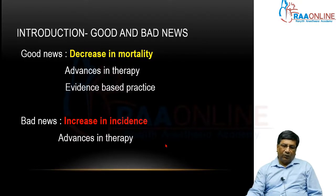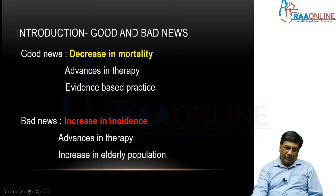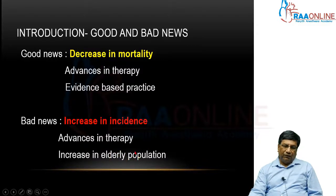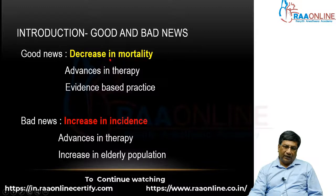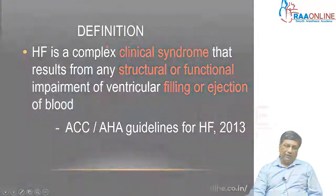Ironically, it is once again because of advances in therapy. You may wonder why advances in therapy are decreasing mortality yet increasing incidence — it is because of the increase in elderly population. Advances in therapy make patients live longer, and the longer a patient lives, there is a tendency to develop heart failure. So the price we pay for making patients live longer is heart failure. That's why it is very important to understand: we have a decrease in mortality in heart failure, but we have an increased incidence of heart failure.